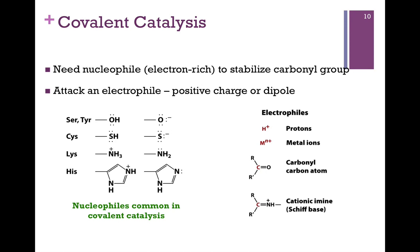So for covalent catalysis, you need a good nucleophile, one that's electron rich, and here's some good examples. Serine and tyrosine with the hydroxyl group, the cysteine sulfhydryl group, and the nitrogens in lysine and histidine. And of course, they will be attacking electrophiles. It might carry a positive charge, like protons or metal ions, or it might have a positive dipole, such as a carbonyl carbon atom or the carbon atom in a cationic imine.